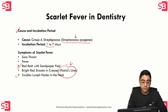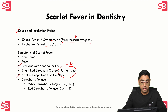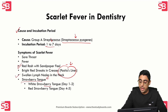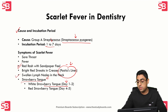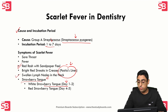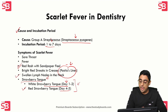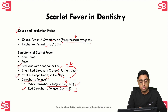The patient will also present with swollen lymph nodes in the neck. There is also the classical sign called strawberry tongue. In the first two days, you will see a white strawberry tongue, especially on the dorsal surface — the white coating is due to visible fungiform papillae. By the fourth and fifth day, the white coating peels off, revealing a red, swollen tongue with prominent papillae.